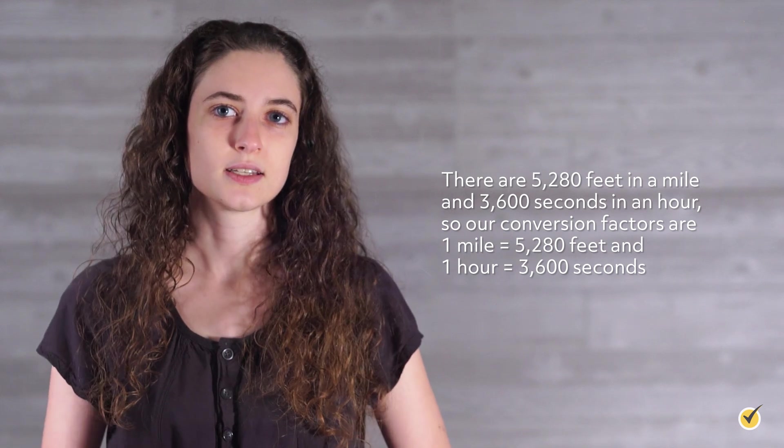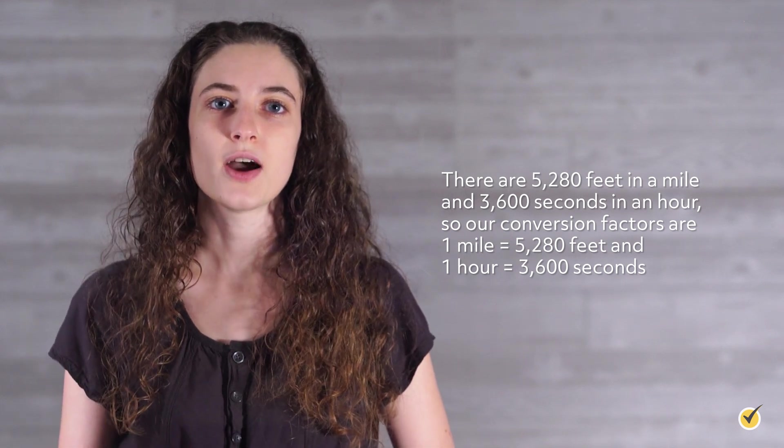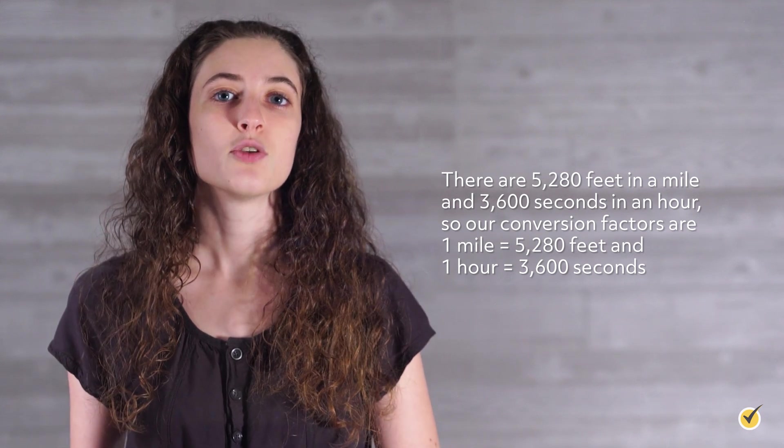Let's look at another example. Sarah is driving down a road at 30 miles per hour. How fast is she traveling in feet per second? This problem is a little different from our last one because it will require two conversions. We need to find our conversion factors for miles to feet and for hours to seconds. There are 5,280 feet in a mile and 3,600 seconds in an hour. So our conversion factors are one mile equals 5,280 feet and one hour equals 3,600 seconds.